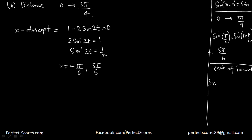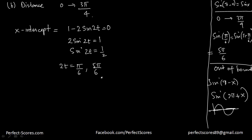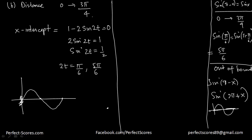Since sin repeats after 2π, any other value would fall outside our bounds. So we have only these two x-intercepts: t = π/12 and t = 5π/12. In degrees, 3π/4 is 135°, π/12 is 15°, and 5π/12 is 75° — so we integrate from 0 to 15°, from 15° to 75°, and from 75° to 135°.